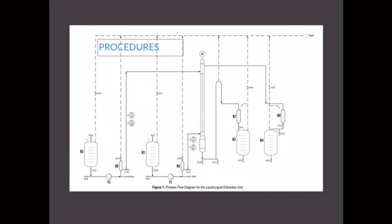The bottom product contains the water-rich phase or raffinate, while the top product consists of the toluene-rich phase. Monitor the interface level and maintain it at about 100 cm above the solvent inlet by adjusting the height of the overflow U-tube. Once both collection vessels B3 and B4 are filled with sample product, start to collect the sample.